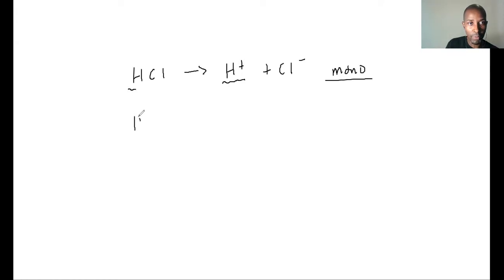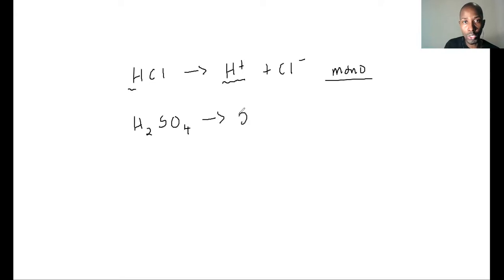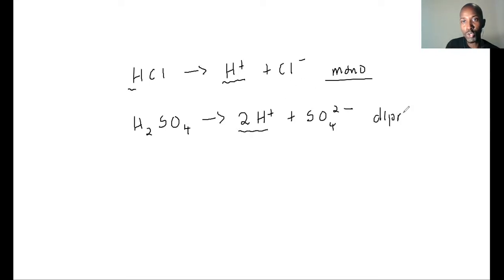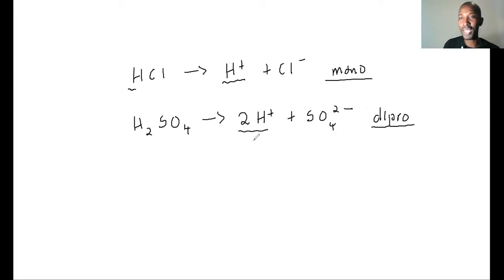Sulfuric acid, whose formula is H₂SO₄, is able to give out two protons per molecule of acid, so this one becomes diprotic. It's important to know the monoprotic as well as the diprotic acids. You can also go further and find other versions of it, but monoprotic and diprotic for our level would suffice.